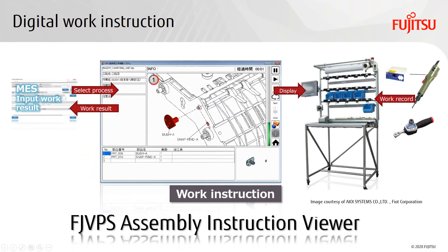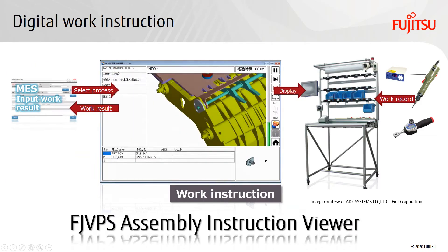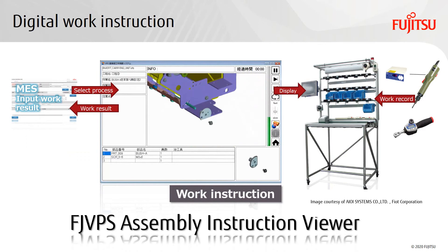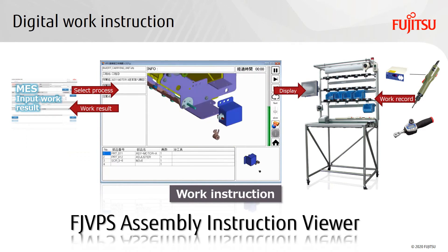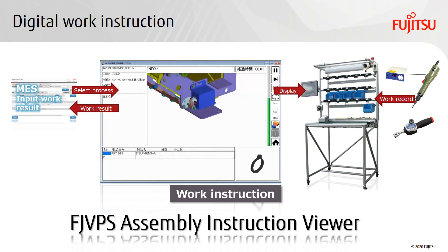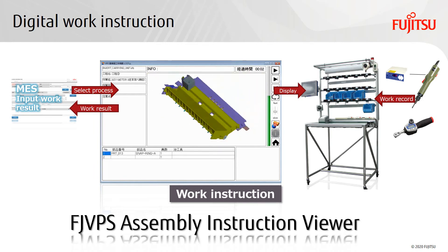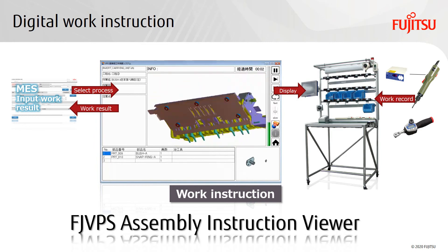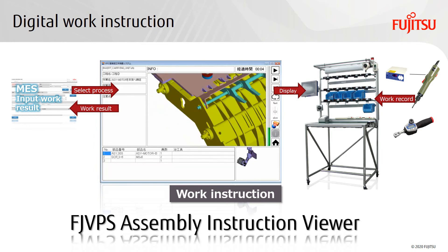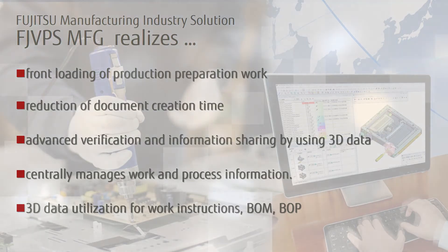Assembly animations created by FJVPSMFG are useful for work instructions. FJVPS Assembly Instruction Viewer plays the assembly animation and the operator follows it. This viewer can also be connected to MES and various assembly tools to record work time and inspection results. As a result, work quality is improved and the work site is paperless.